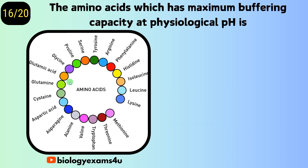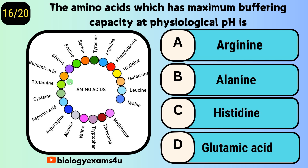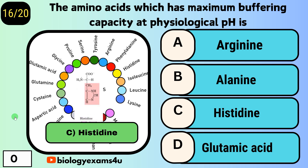Question number sixteen: the amino acid which has maximum buffering capacity at physiological pH is — option A, arginine; option B, alanine; option C, histidine; option D, glutamic acid. The answer is histidine, which has the maximum buffering capacity at physiological pH.